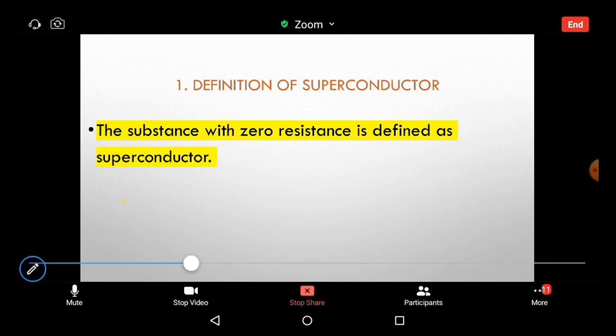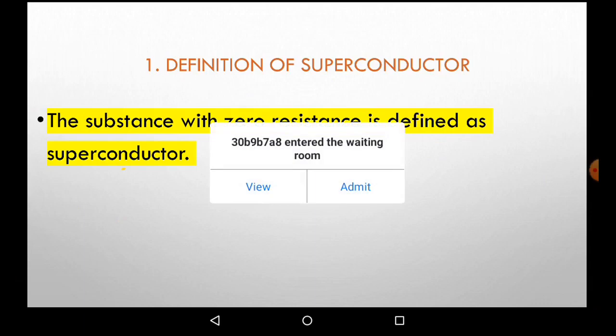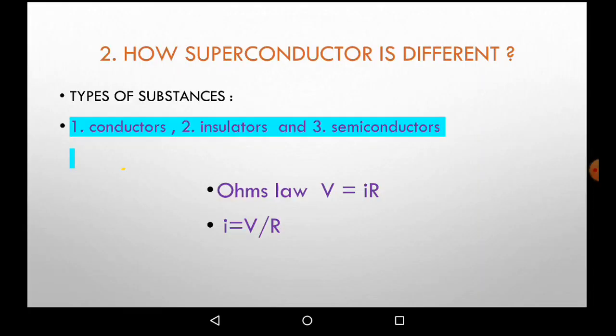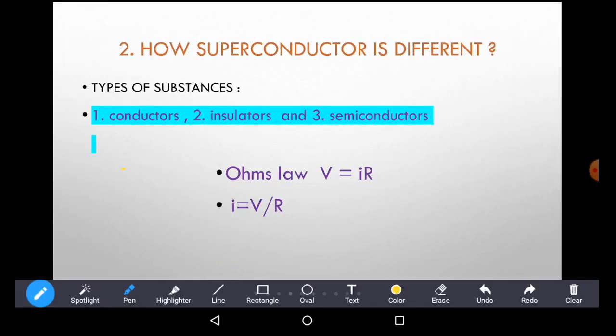How are superconductors different from other materials? We have three types of materials according to the flow of current: conductors, insulators, and semiconductors. These are the categories of substances classified according to the flow of current.